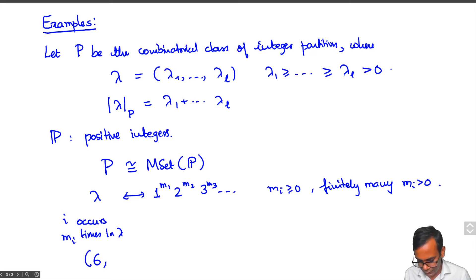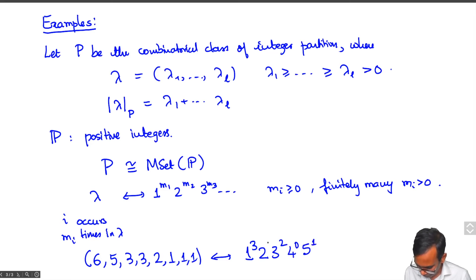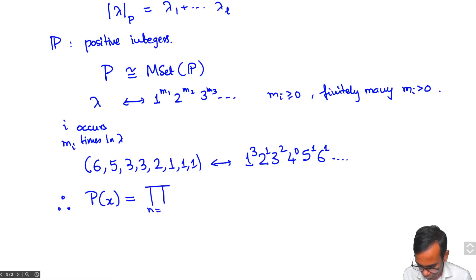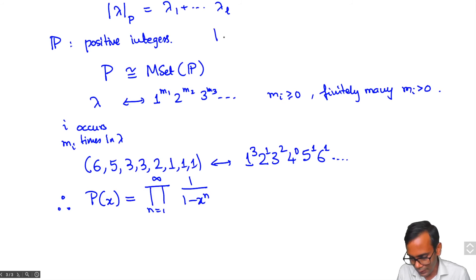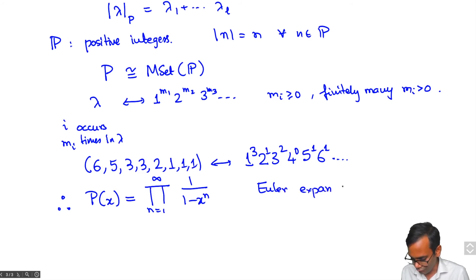For example, the partition 6, 5, 3, 3, 2, 1, 1, 1 corresponds in exponential notation to 1^3, 2^1, 3^2, 5^1, 6^1 (with all other exponents zero). Since there is exactly one element of each size in the combinatorial class of positive integers (namely, a_n = 1 for all n), we immediately get the generating function of P as the product from n=1 to infinity of 1/(1-x^n), which is Euler's famous expansion of the partition generating function.